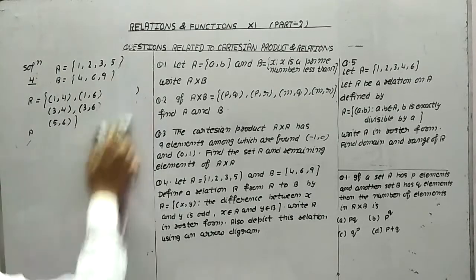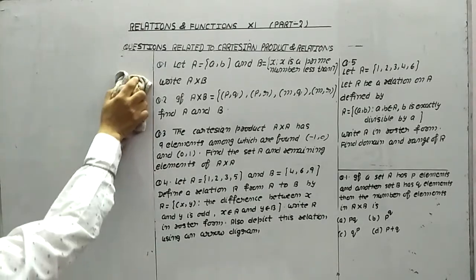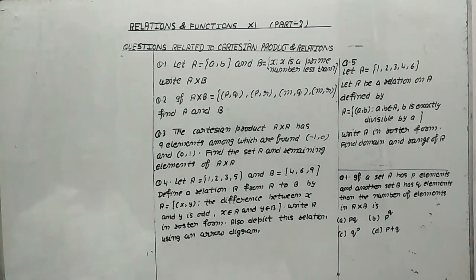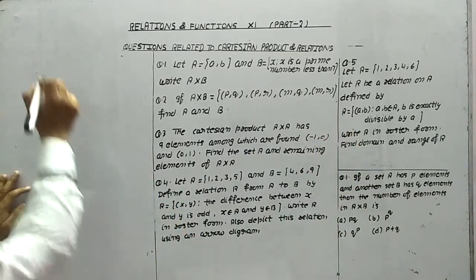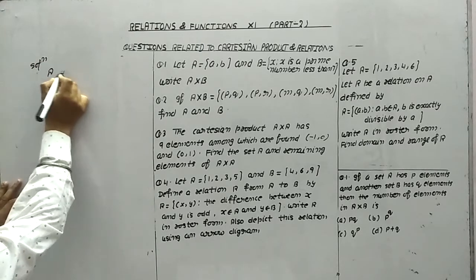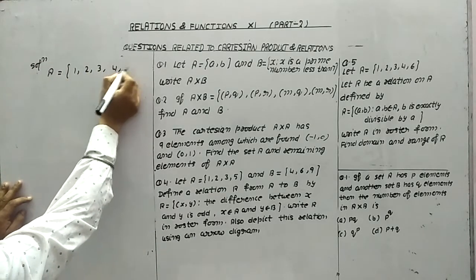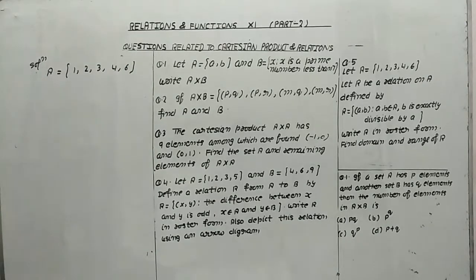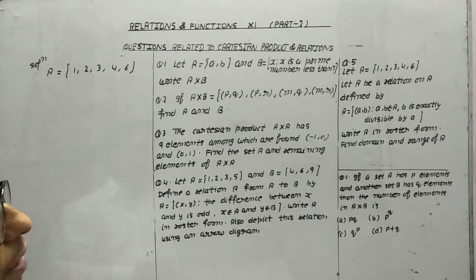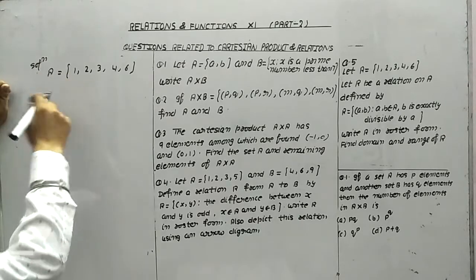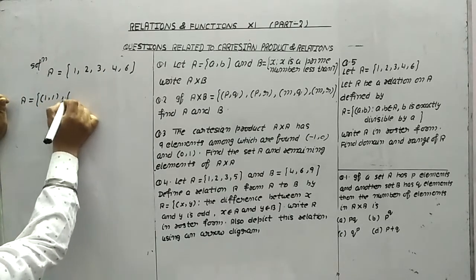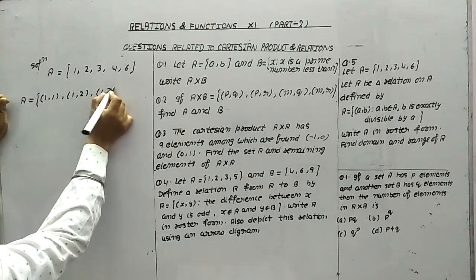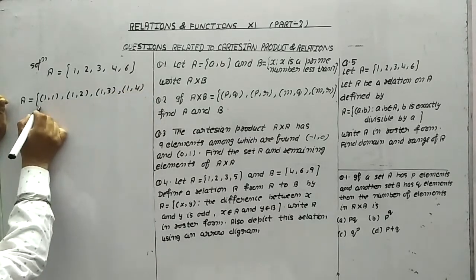Question number 5: Let A = {1, 2, 3, 4, 6}. R is a relation defined as (a, b) such that (a, b) belongs to A, and b is exactly divisible by a. Write R in roster form. With a=1: (1,1),(1,2),(1,3),(1,4),(1,6). With a=2: (2,2),(2,4),(2,6) — note (2,1) and (2,3) are not divisible. With a=3: (3,3),(3,6) — others excluded.